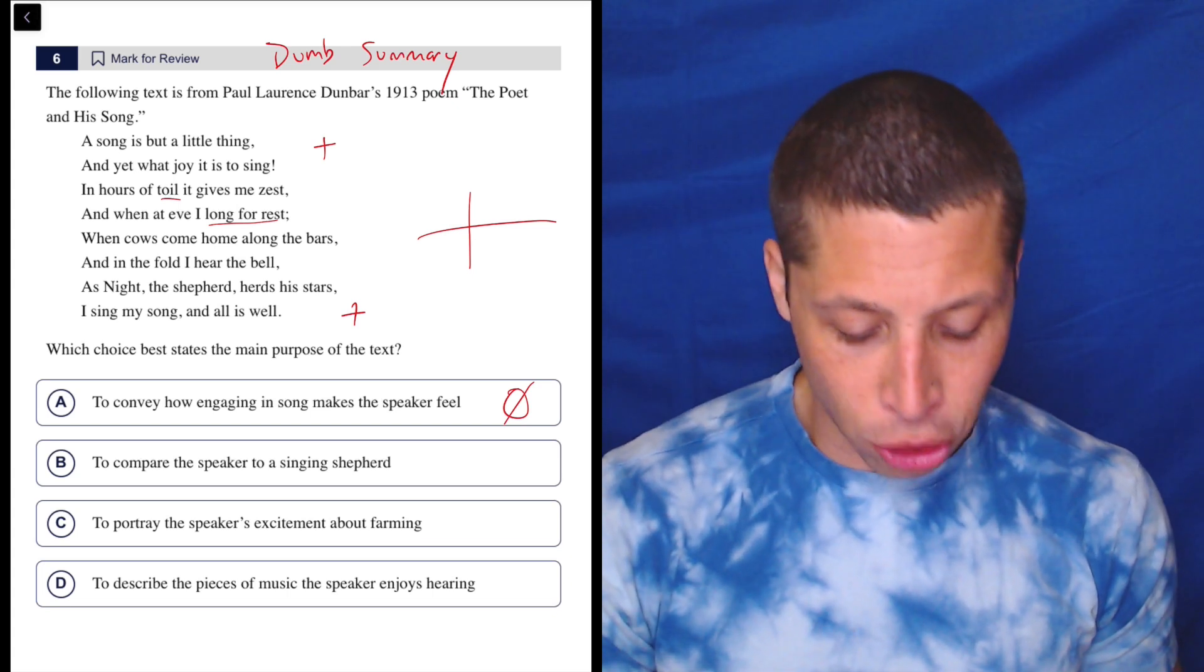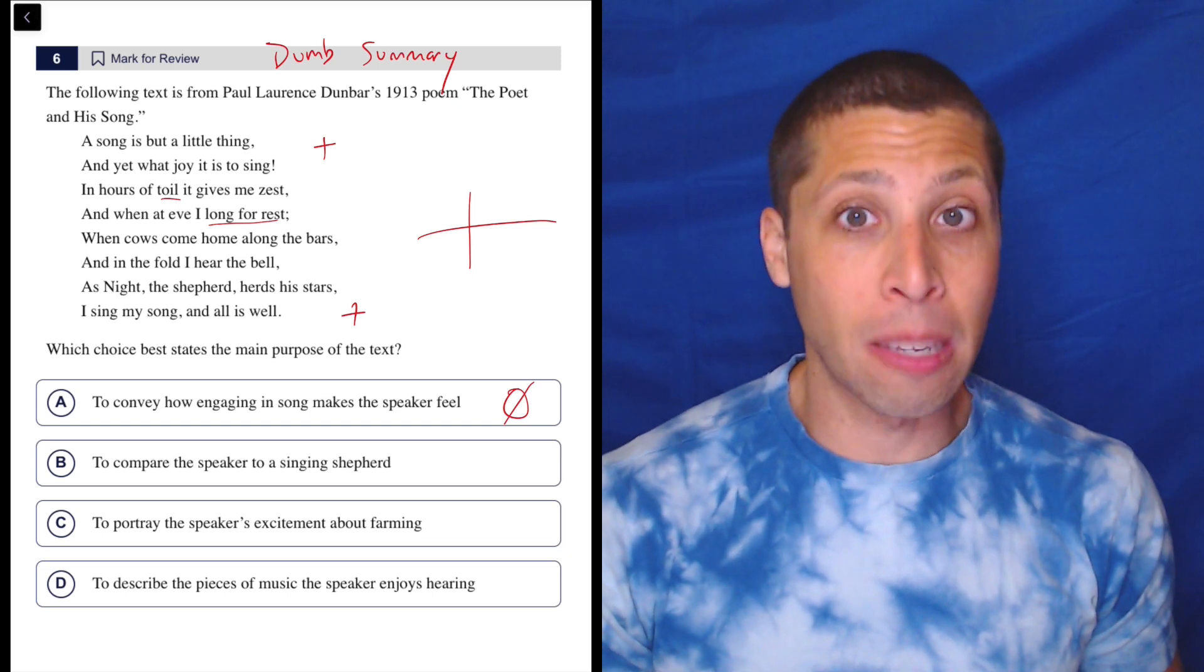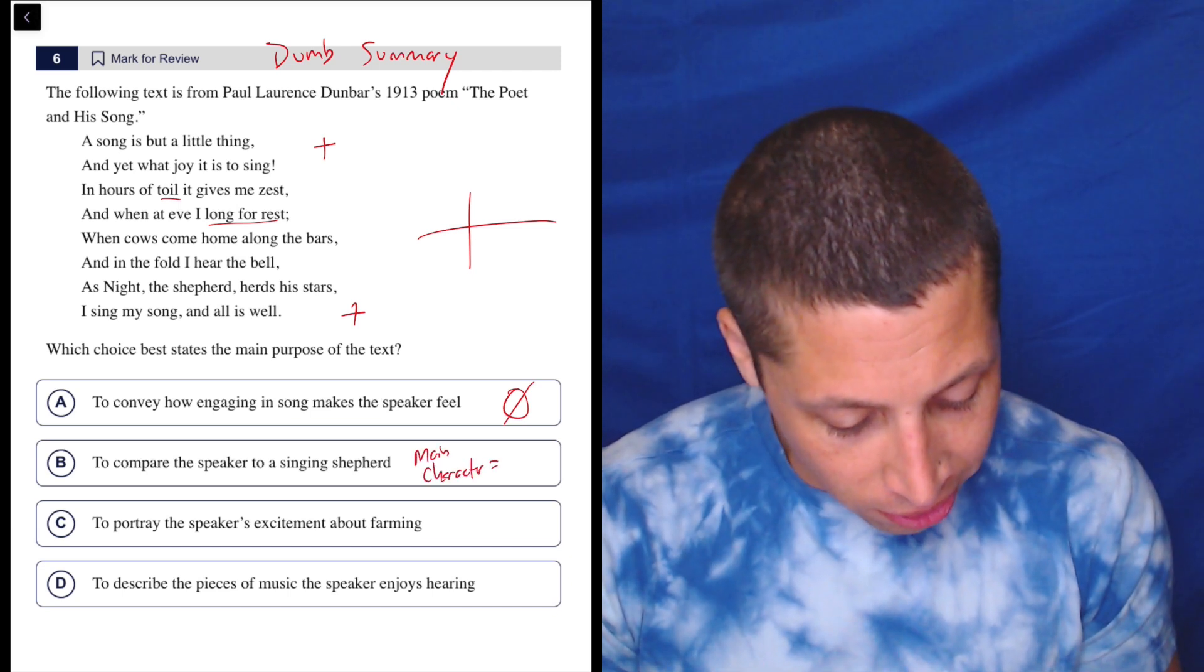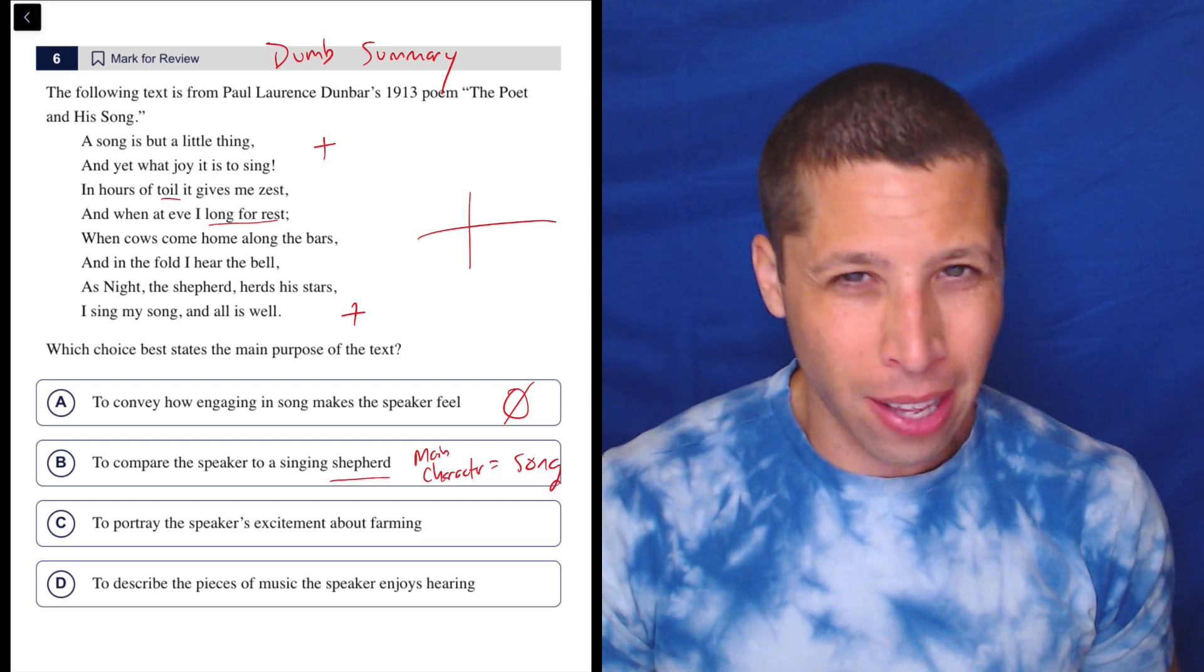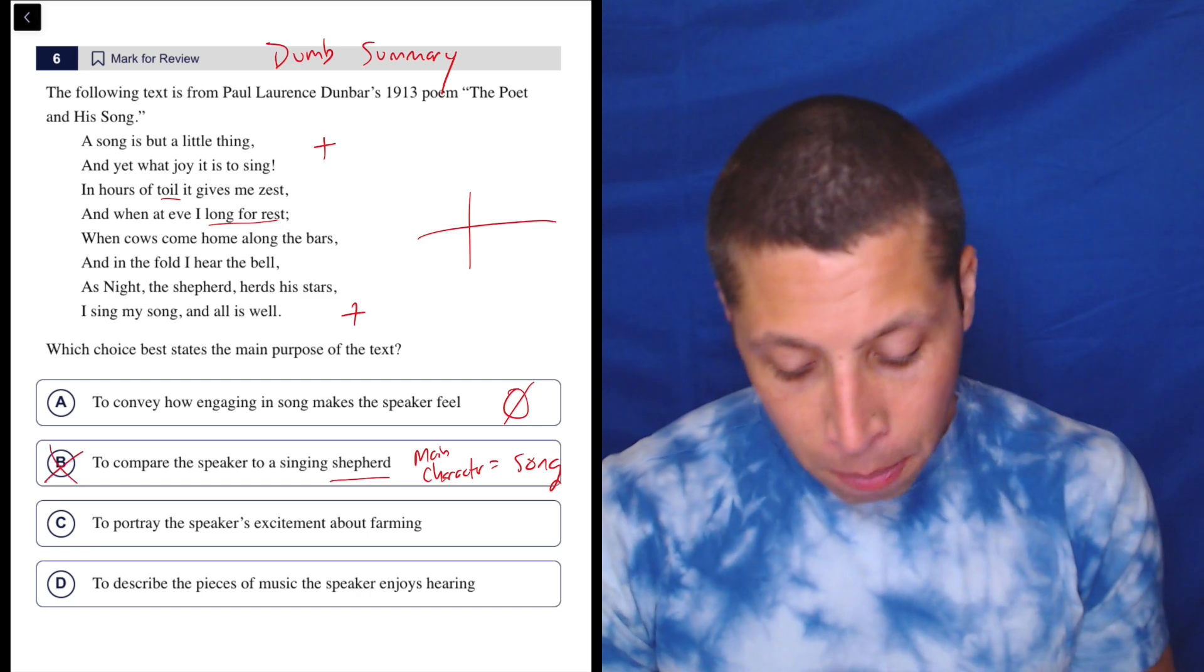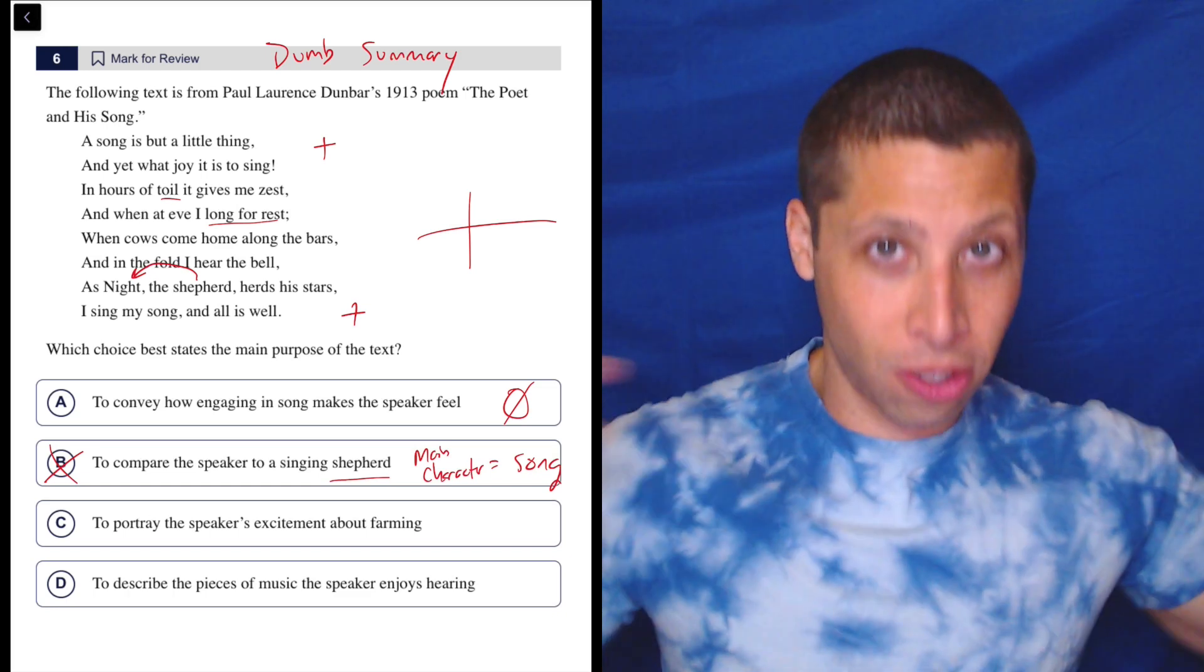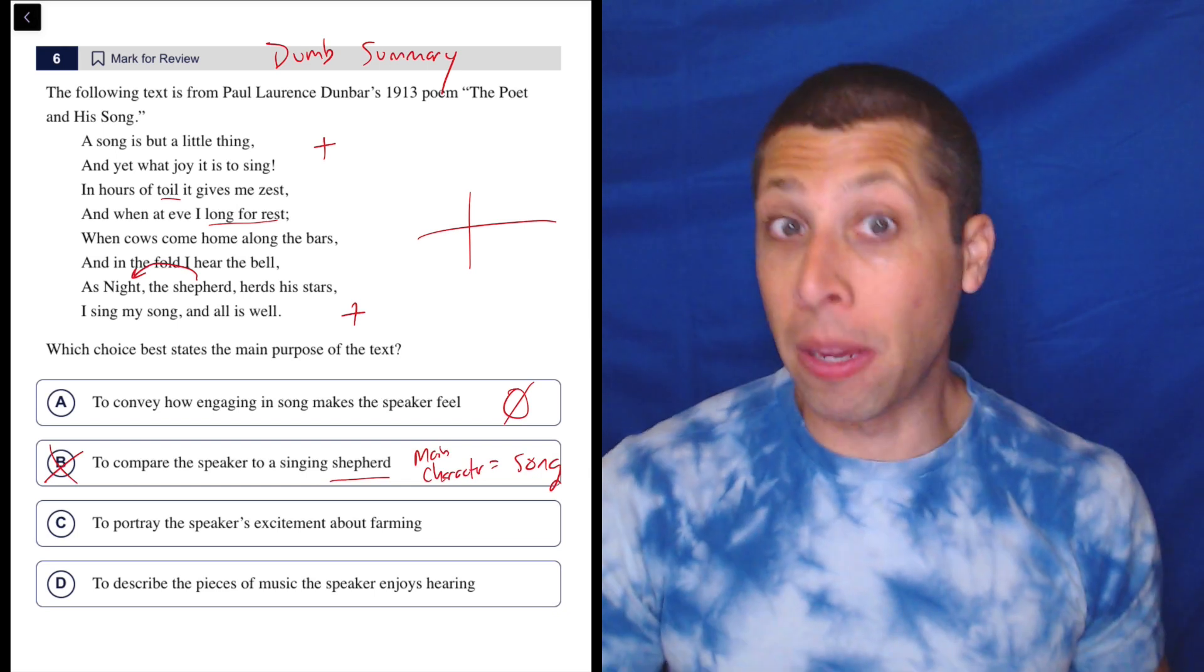It is to compare the speaker to a singing shepherd. Well, this is a good example of like, don't let one little line throw you off, right? The thing is about a song, right? The main character of this is a song. Main character is a song. Why is the main character of the choice the shepherd, right? I mean, that's one little line. Now here's the other thing. It doesn't really matter. I would have eliminated this regardless. But the night is the shepherd. The night is like, embodied as a person here and as a shepherd that is herding the stars in the sky, right? It's a metaphor. You don't really need to understand that, but it's proving B wrong completely.